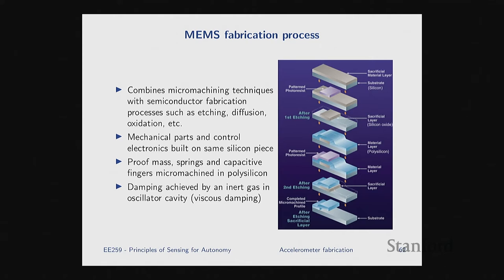At a high level, the MEMS process is sequential: you start with a silicon wafer, deposit some material on it, apply a mask that selectively masks some areas, etch away whatever material was not masked, remove your mask, deposit another layer, mask again, etch. So it's sequential material deposition, masking, etching. By designing the right mask patterns and controlling the deposition process and material thicknesses, you can build very intricate structures in MEMS.